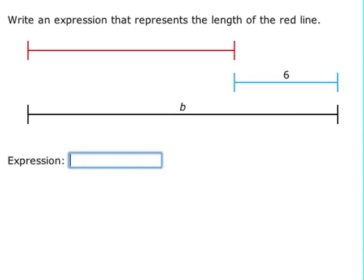Same situation here. The red line is obviously shorter than the black line, so we say B take away 6. We can't combine anymore or add to it because the six doesn't have a B on it. They have to be like terms.